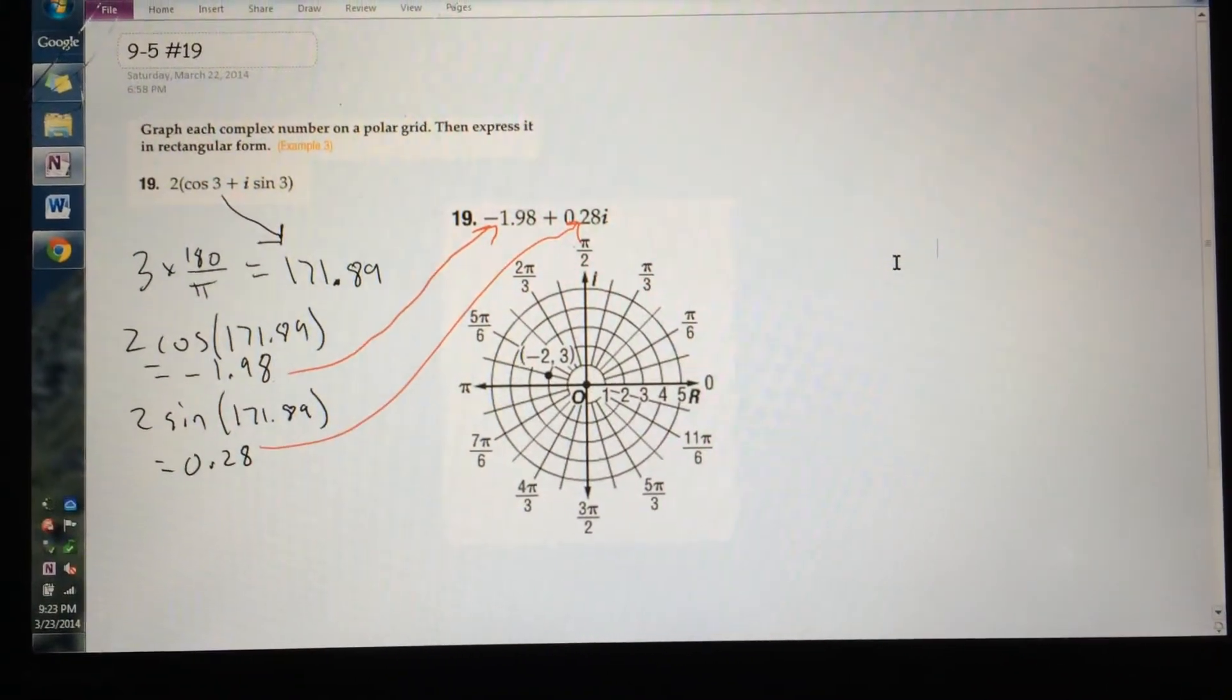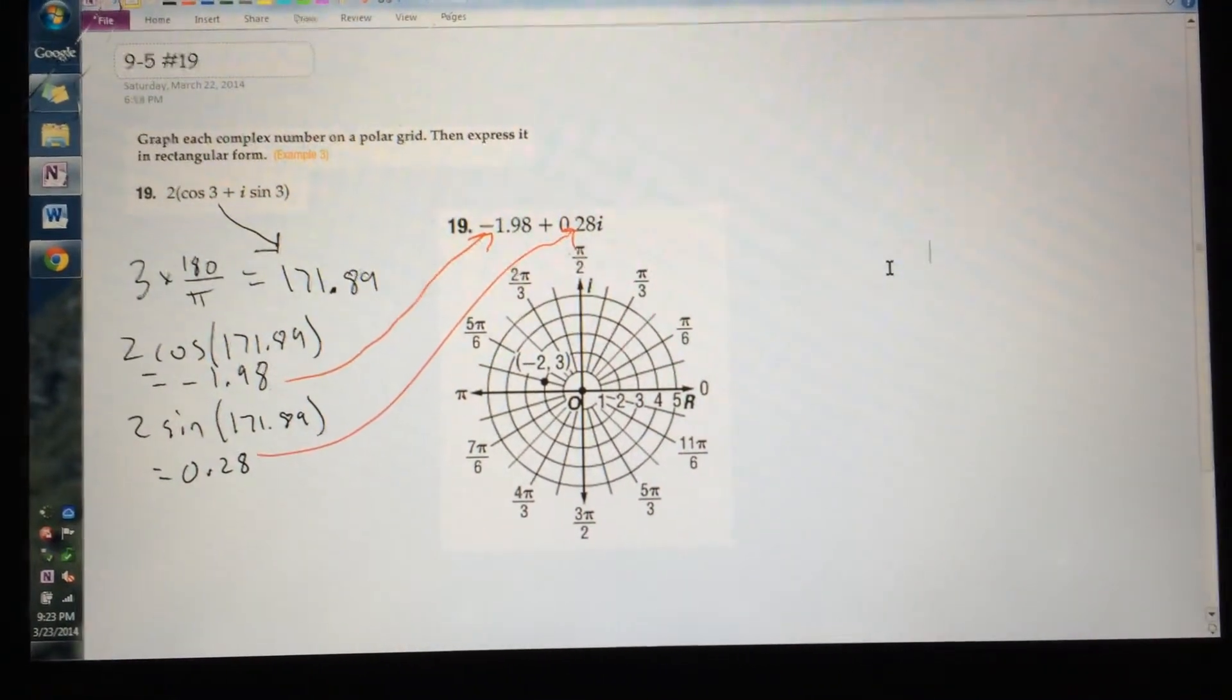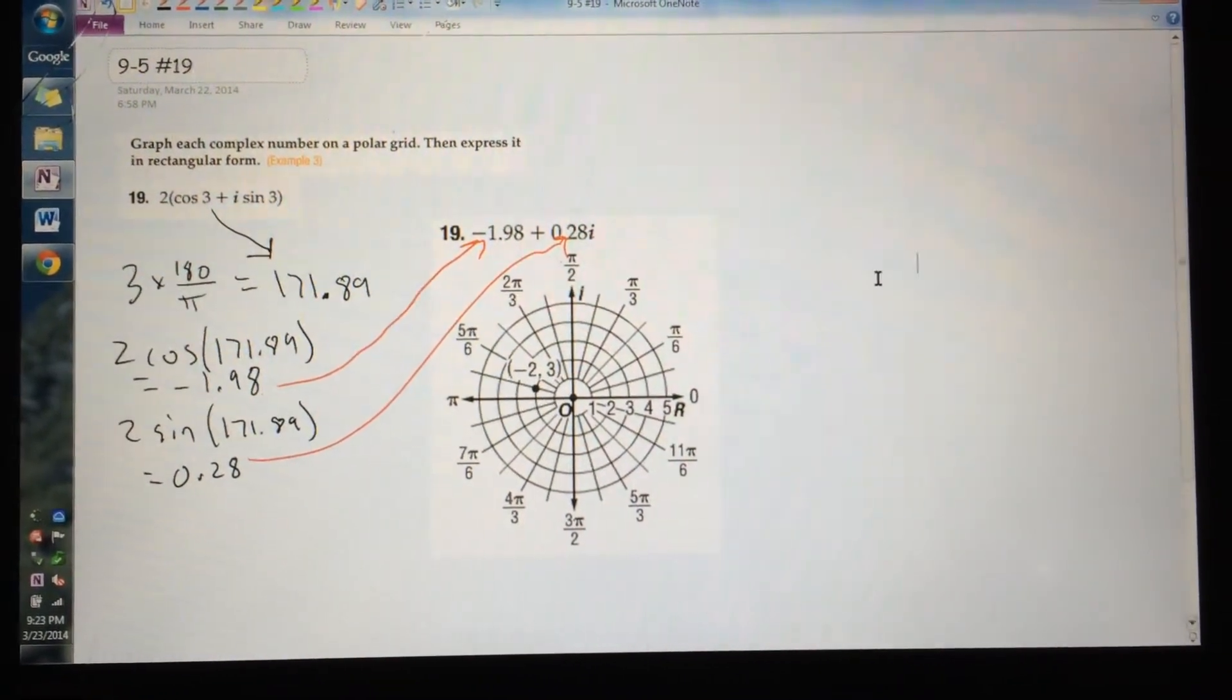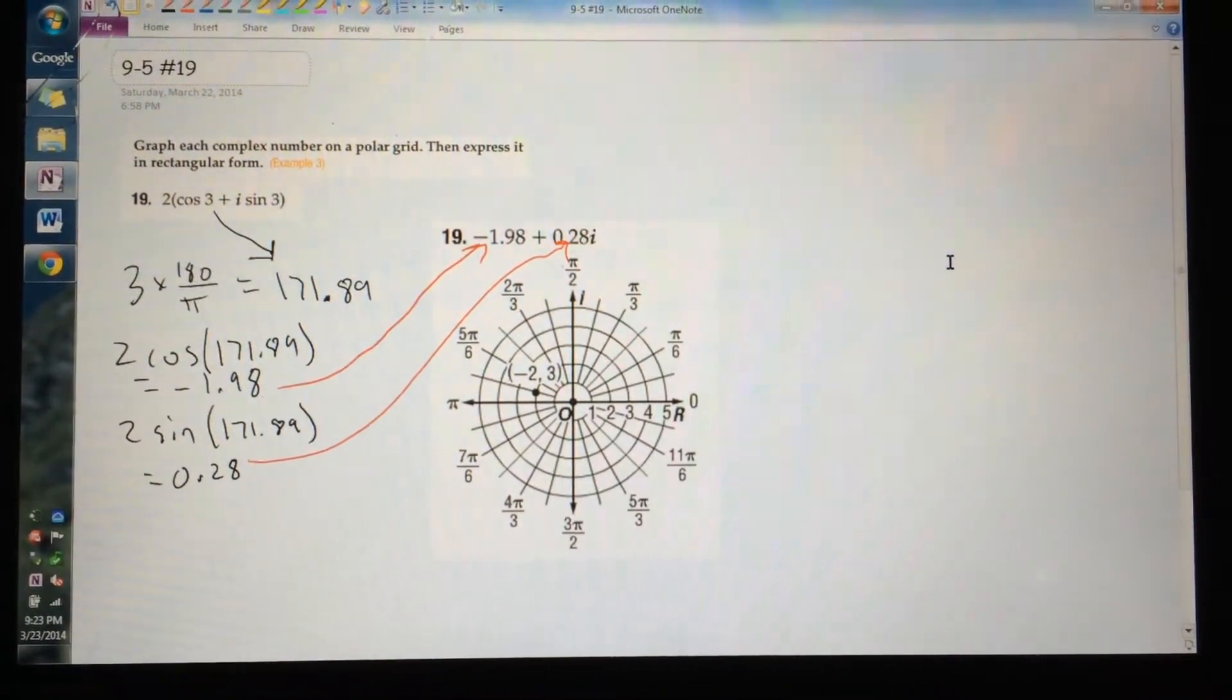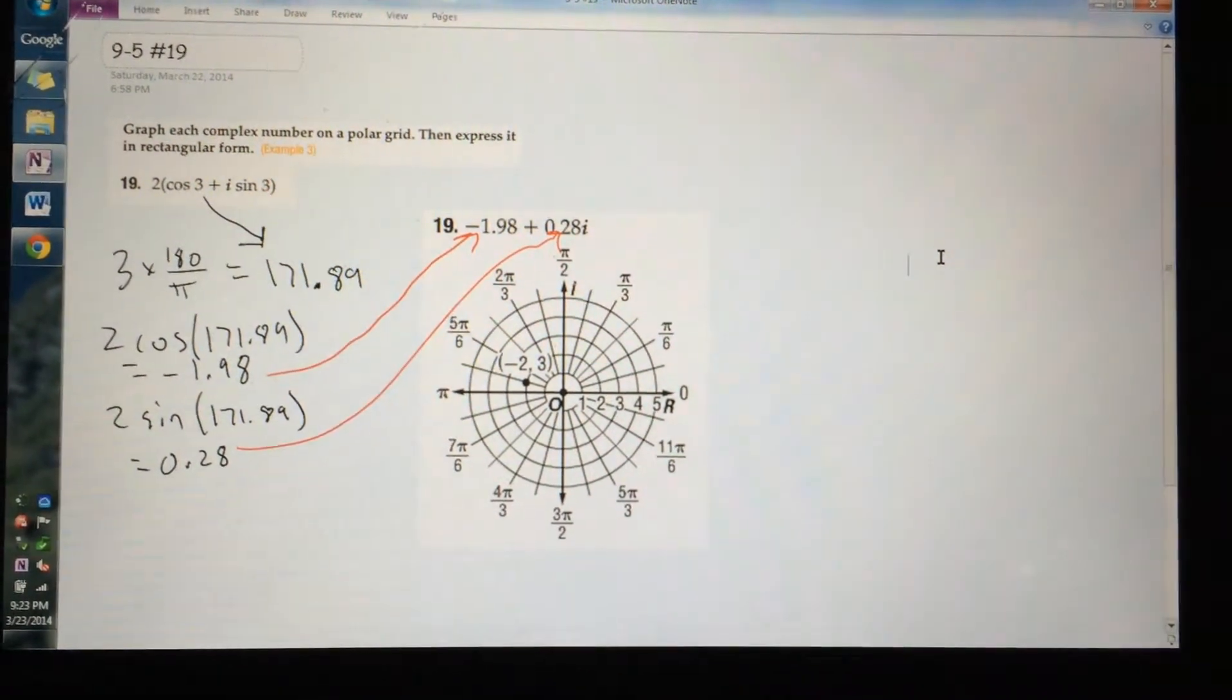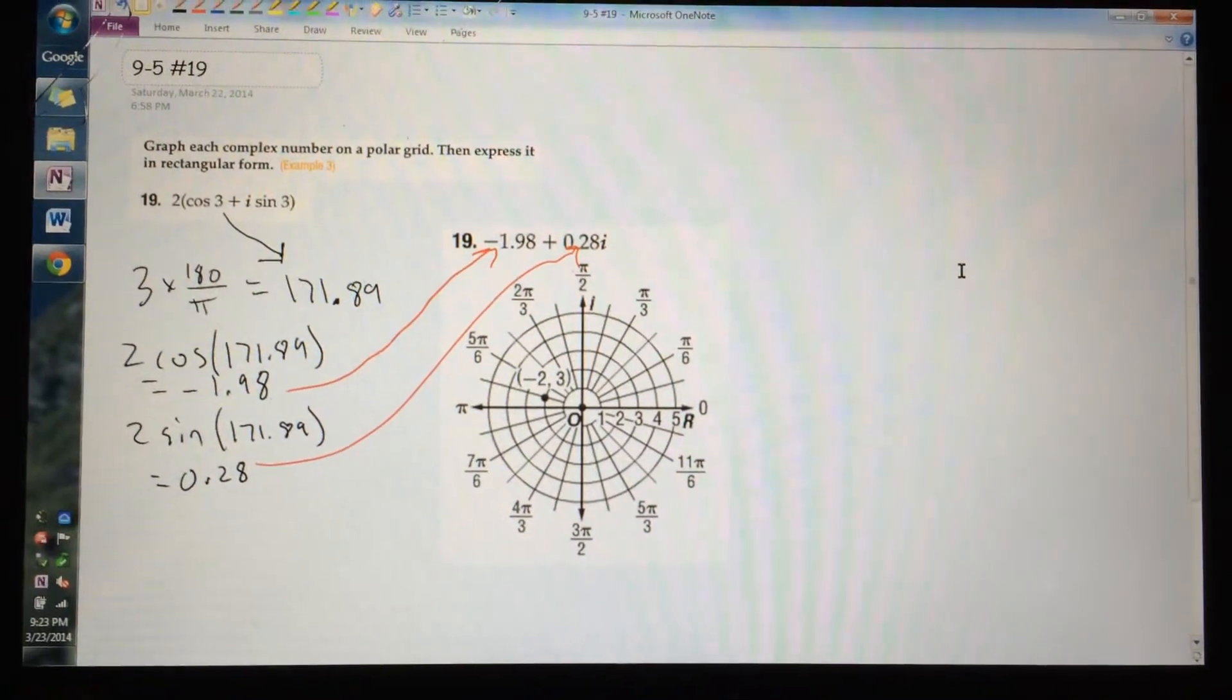The thing that threw me off was the 3, because I knew that the 2 was the radius, or r, and the 3, even though it is in radians, needed to be put in degrees so you could approximate it. So what I did,